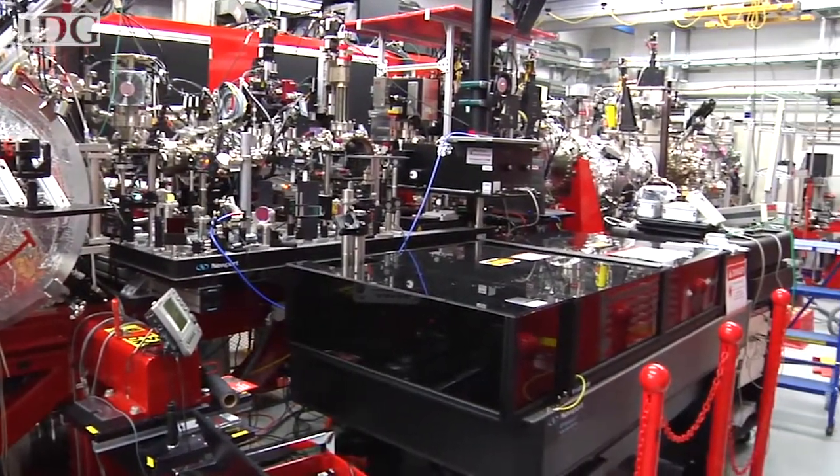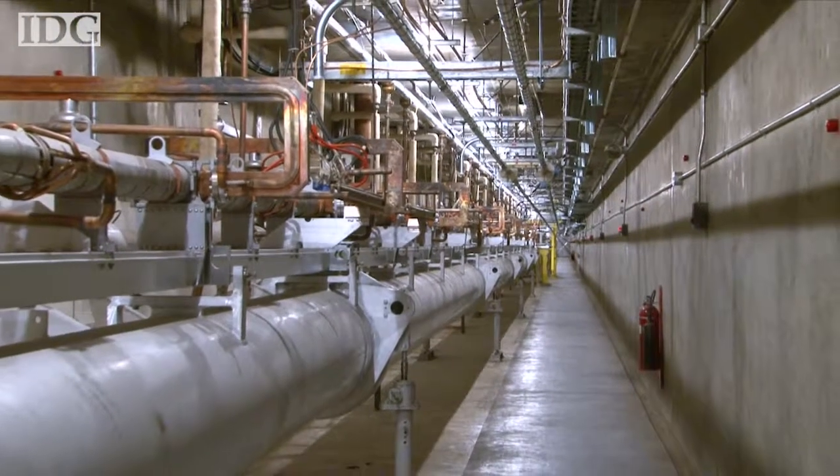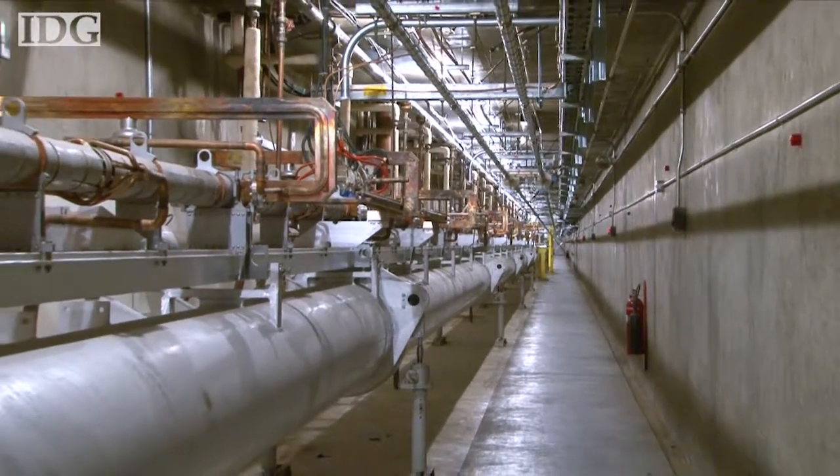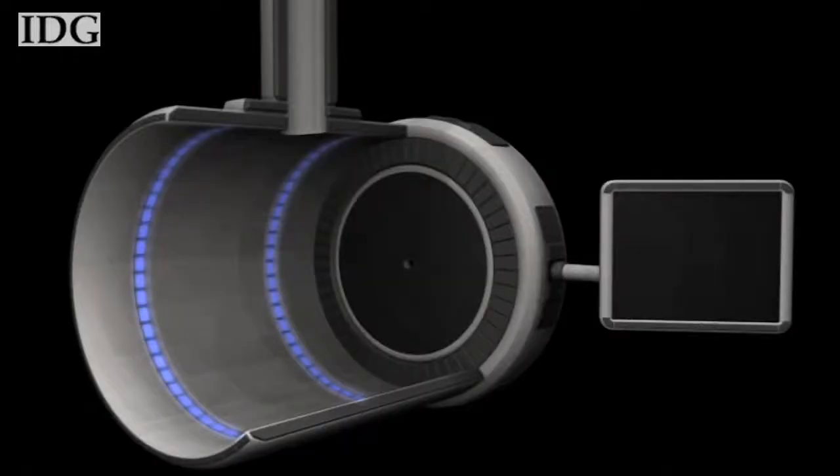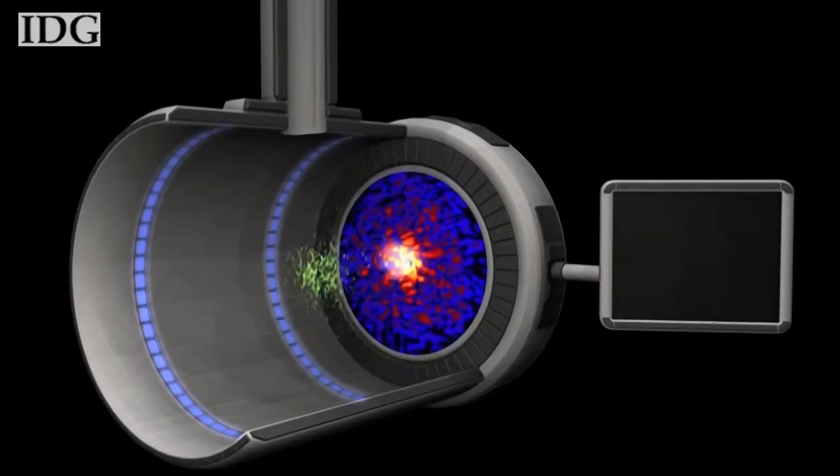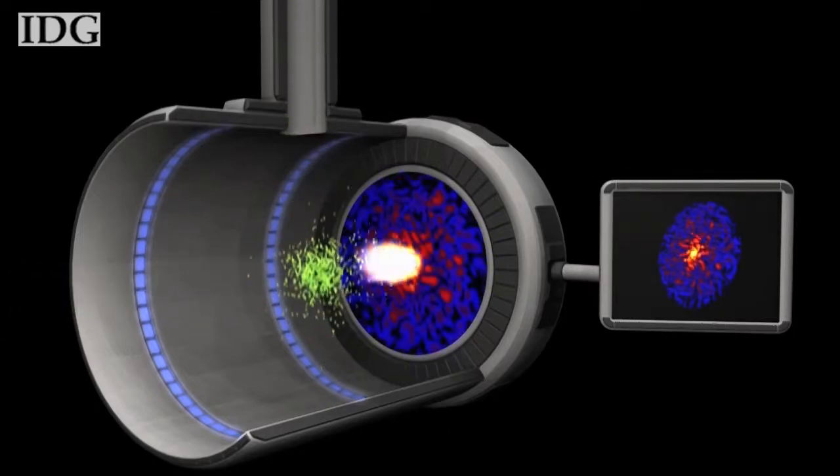And a lot of that work relies on this, the world's most powerful x-ray laser, called the Linac Coherent Light Source, or LCLS. It's the first laser to produce hard x-rays that can be used to see down to the level of atoms and molecules.